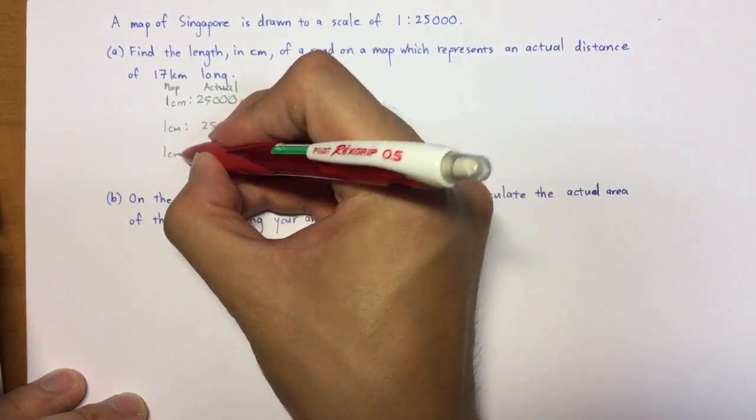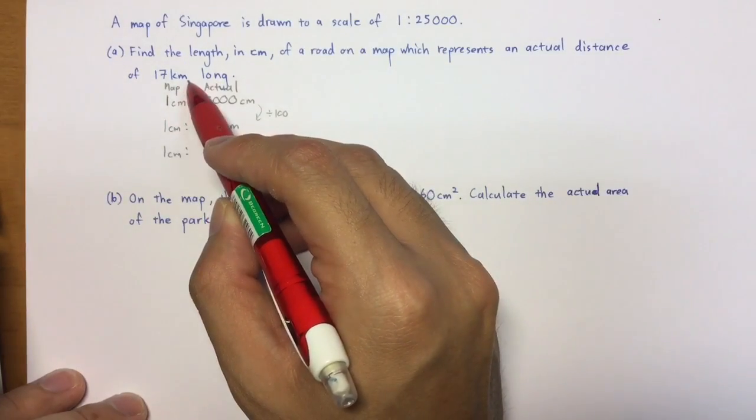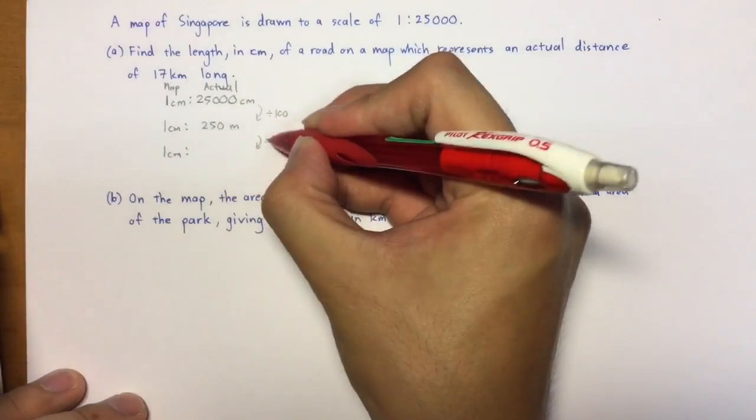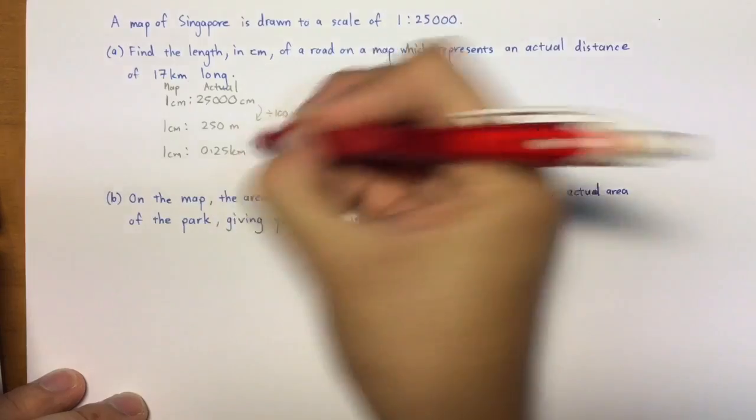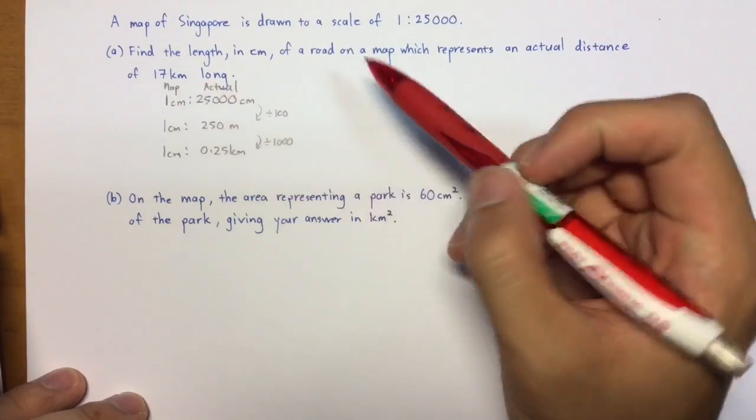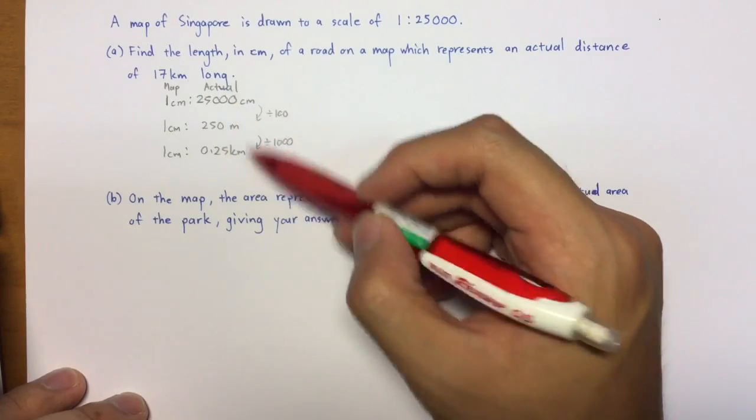Okay, and now I'm going to change this to kilometers. Why? Because they told you that the actual distance is 17 km long. So changing this, again, divide by 1,000 meters, so I'll get 0.25 kilometers. So to recap, what we've seen so far is 1 cm on the map actually represents 0.25 km on the actual distance.